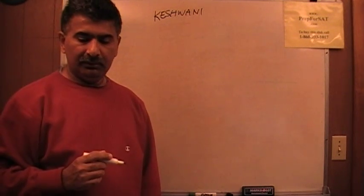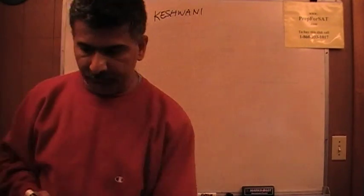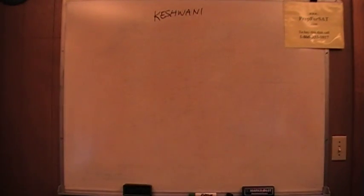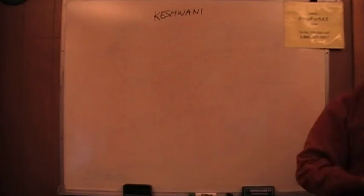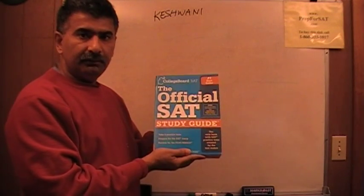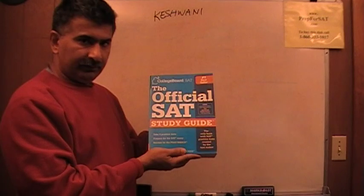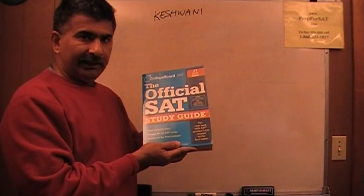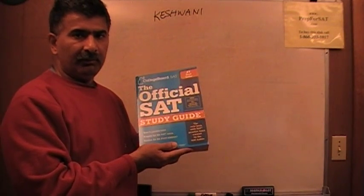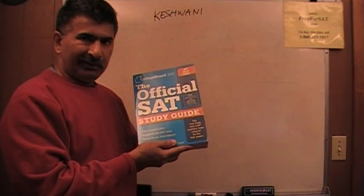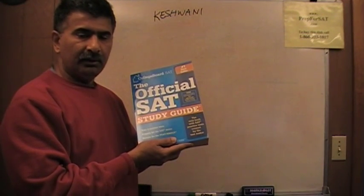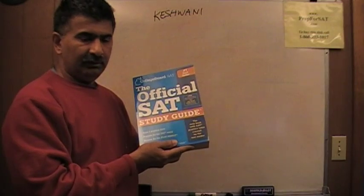I would make one lesson for each section of the exam. The book that you need to purchase is the Official SAT Study Guide from the College Board. There are eight exams in it. I will work through all eight of the exams one by one, one section per disc. There are three sections in each of the exams, so there are altogether 24 lessons that I'm going to put together.